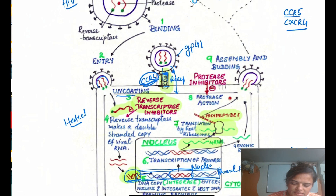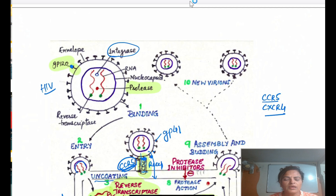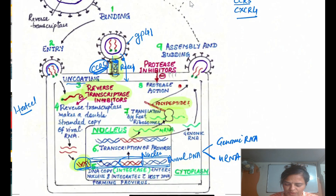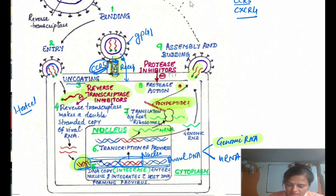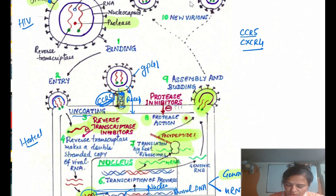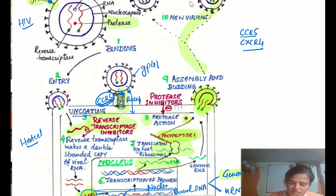The enzyme protease then participates — it causes the breakdown of this longer polypeptide into various structural and functional proteins and enzymes of HIV. All these materials — the genomic RNA, various enzymes, structural and functional proteins — come together. The newly formed viruses assemble and are released from the host cell, ready to infect another cell.